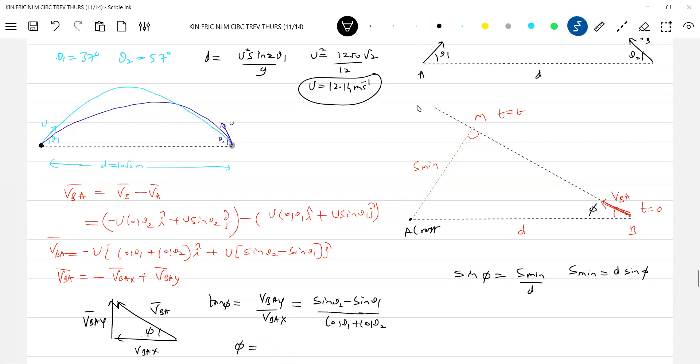Tan inverse of 1 by 7. Now you can calculate the sin phi, substitute. You'll get the minimum distance. Then also you can calculate the time taken.